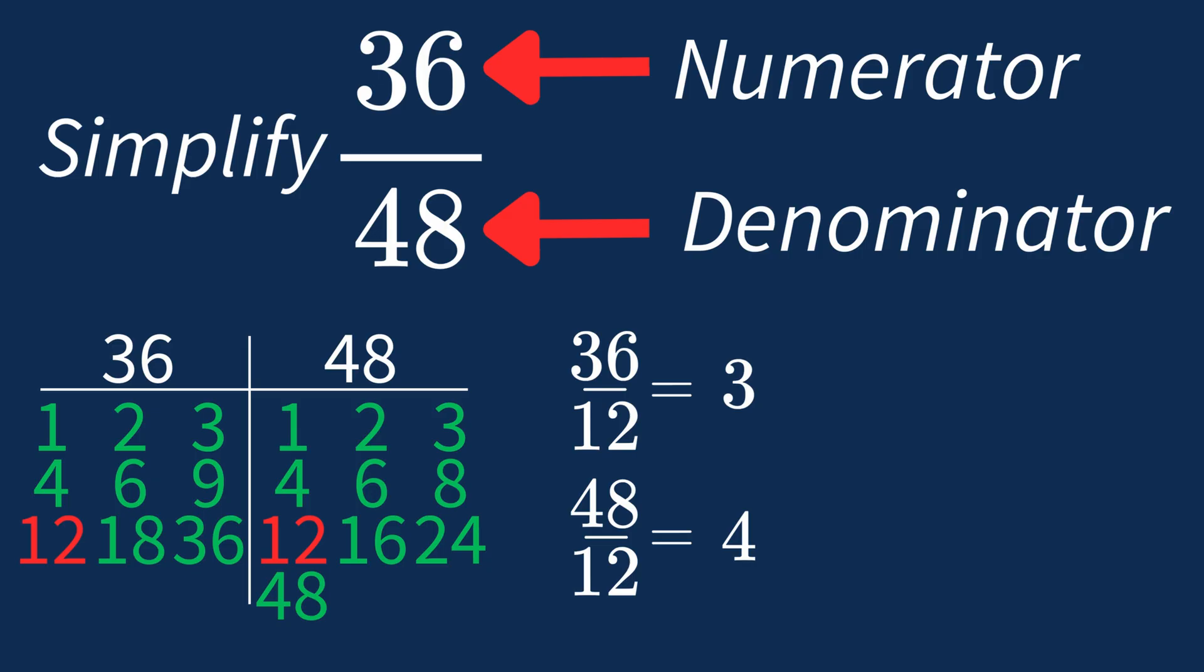So after dividing, the simplified fraction is 3 over 4. And we know that 3 over 4 is in its simplest form, because the only common factor between 3 and 4 is 1. And when 1 is the largest common factor, we know that our fraction has been simplified.